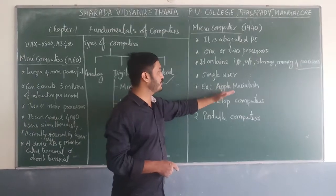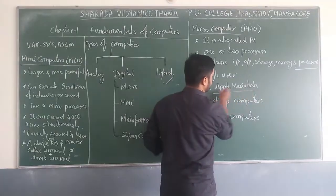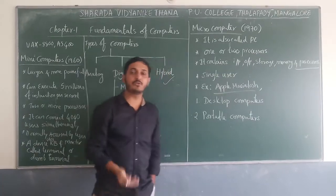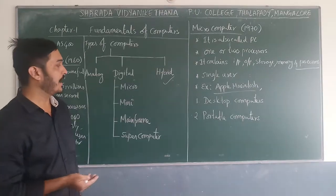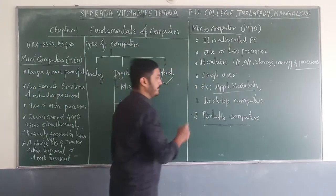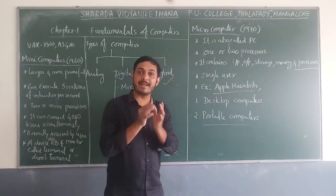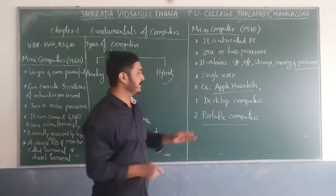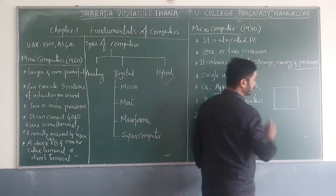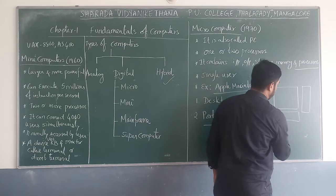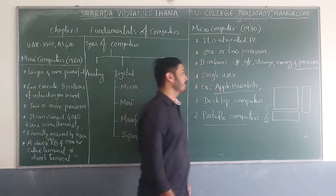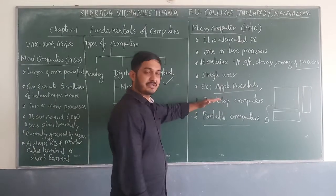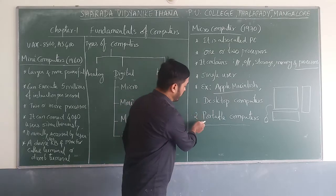There are two types of micro computers: desktop computer and portable computer. A desktop computer is placed on a tabletop and is also called a tower computer — it includes a monitor, CPU cabinet, keyboard, and mouse. It can execute a set of instructions and has the same processing power as a portable computer.